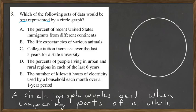As I've written below, a circle graph works best when comparing parts of a whole. Which of these compares parts of a whole? Let's look at A — the percent of recent United States immigrants from different countries. Your total immigration would be your whole, and then on the circle graph you could have different parts representing percentages from each country.